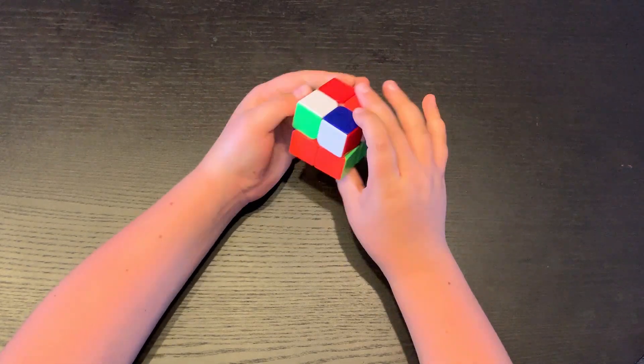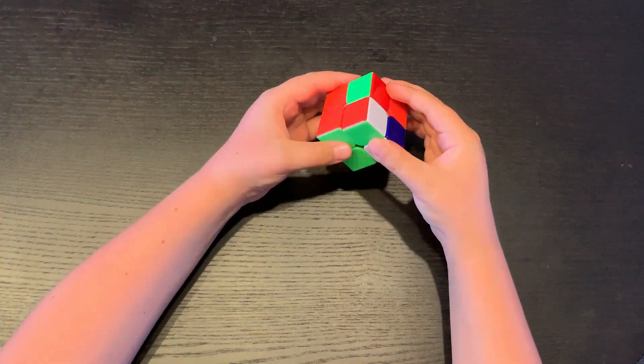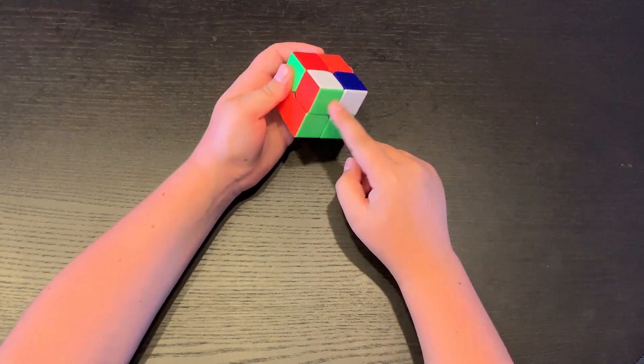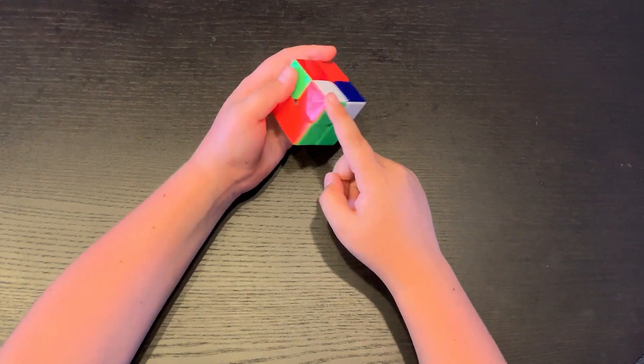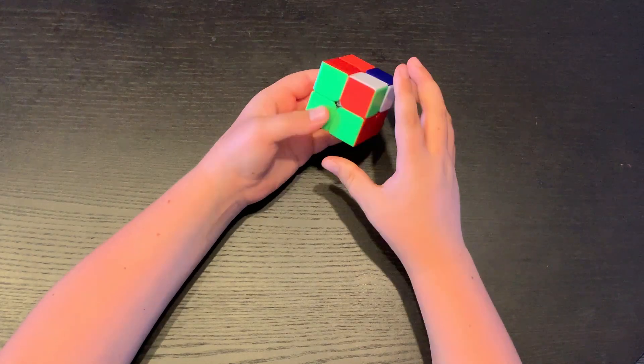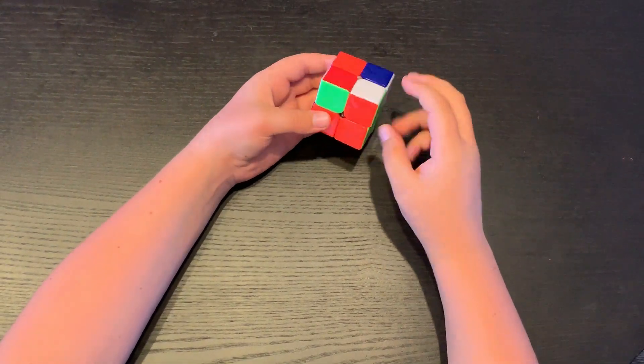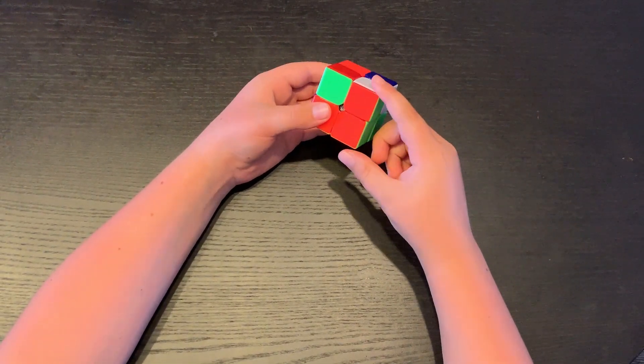You first make one side, so that all the colors are matching. And then now you have to match these up. You only have one corner matching, maybe you'll have two.